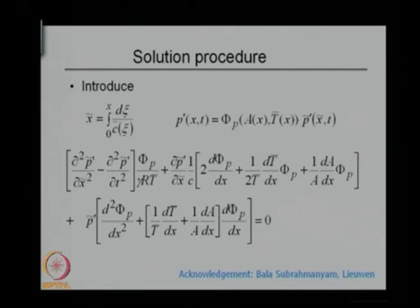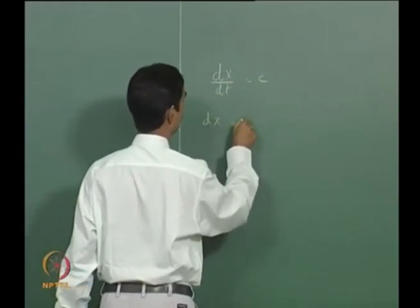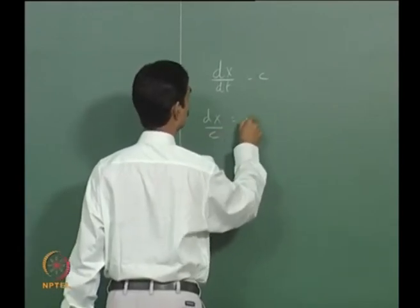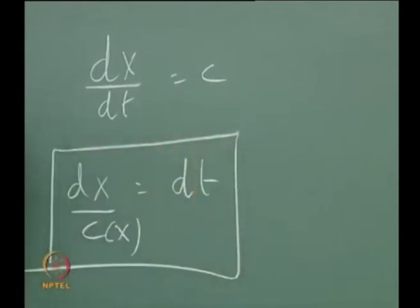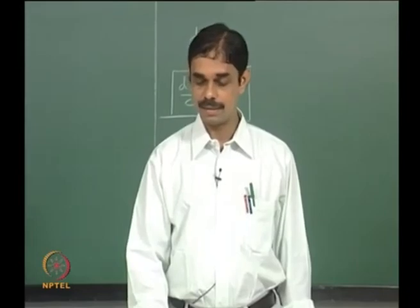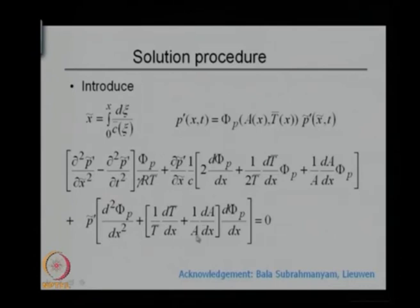Now we think about the solution. We have the characteristic equation dx/dt = c, where c = c(x). Integrating this gives a solution in terms of an integral. We attempt to write pressure as some function of area and temperature multiplied by another function, neatly separating them. Substituting this into the wave equation yields a result that — in the first part at least — is very beautiful.